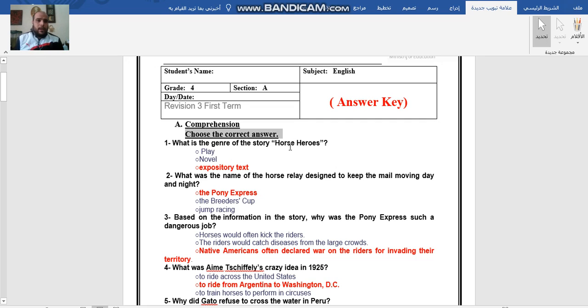What is the genre of the story Horse Heroes? It's an expository text. If he's going to ask you what is an expository text, everyone knows that it provides us with truths, facts. It exposes us to real events, maybe in the past or in the real time we are living in today. So it's a real text.